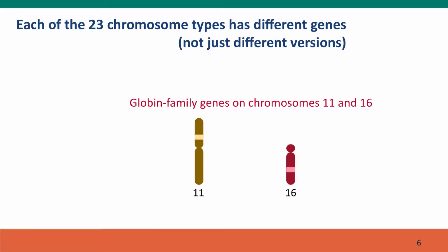I want to focus on just one pair from a gene family present on two of our chromosomes: the genes of the globin family. The globin family is the family of proteins that produce our hemoglobin, the protein that transports oxygen in our blood. We have globin genes on chromosome 11 and on chromosome 16. These are two different loci — we can tell because they're on completely different, non-homologous chromosomes.